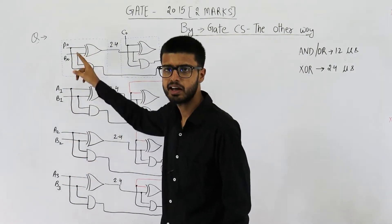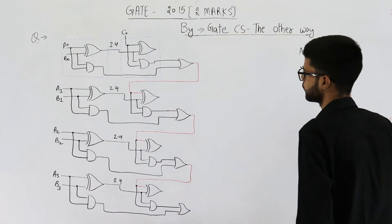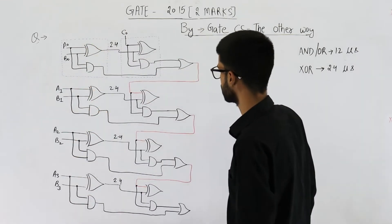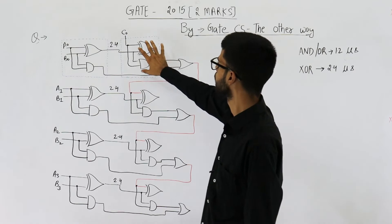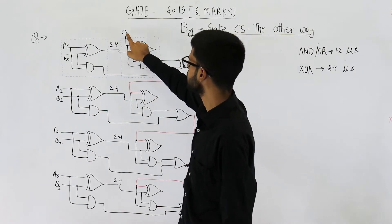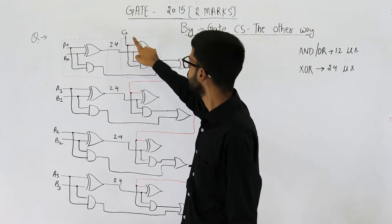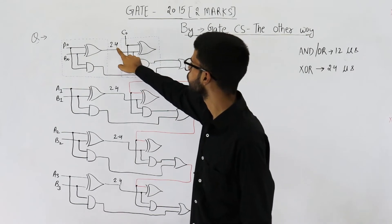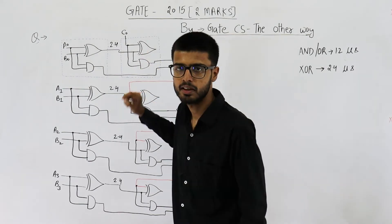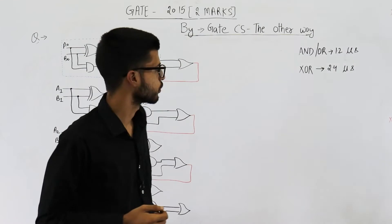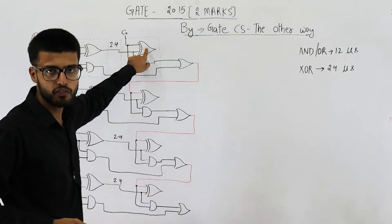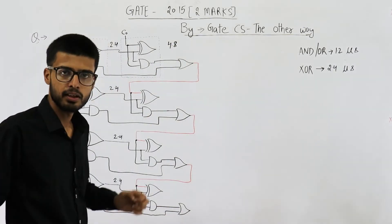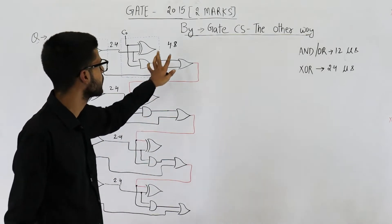These are the input numbers: a 4-bit binary number A and a 4-bit binary number B that we want to add. The carry-in and both of these numbers are available initially. Now let's talk about this second half adder. One of its inputs is available at time zero, but the other input takes 2.4 microseconds. So we add this 2.4 to the 2.4 delay of this half adder, giving 4.8 microseconds. That means the first sum bit will be available after 4.8 microseconds.